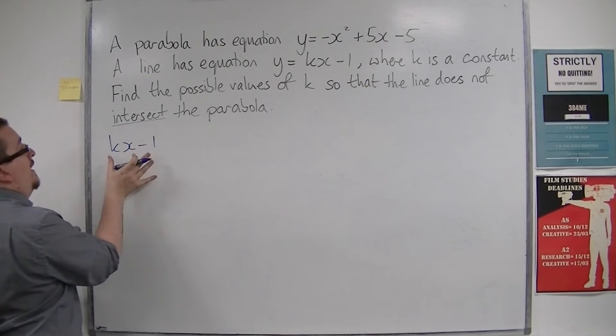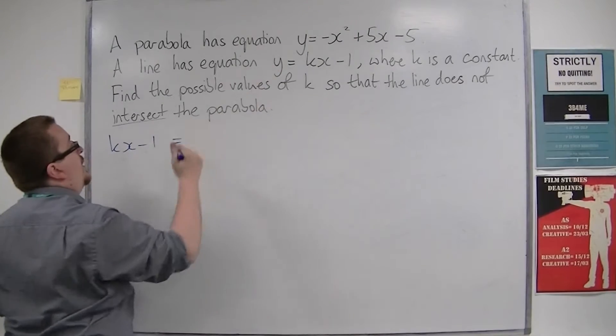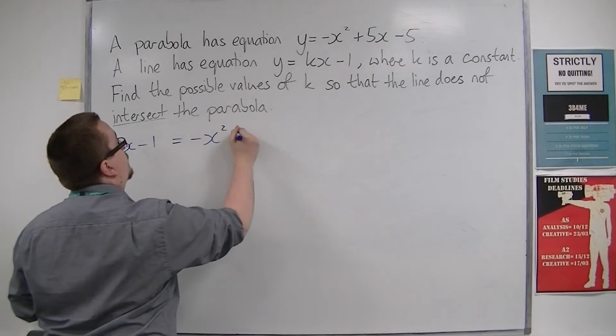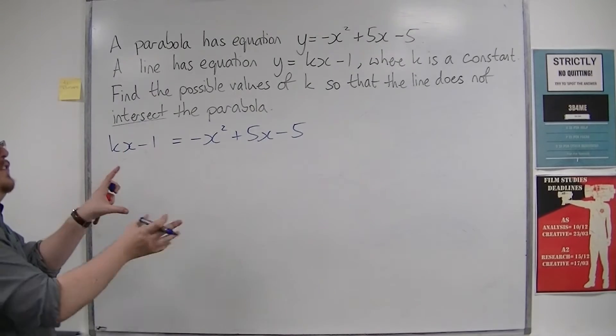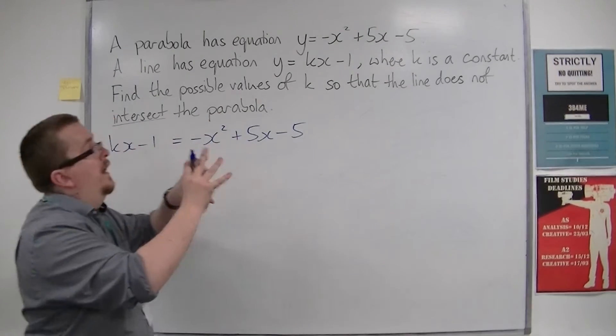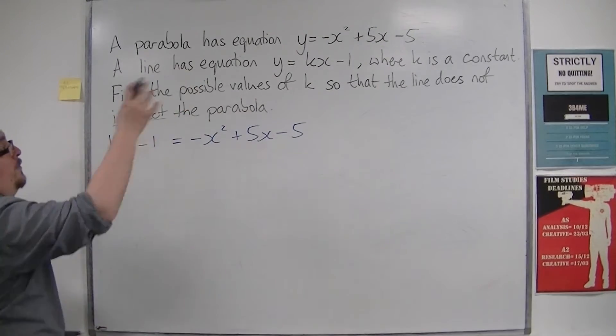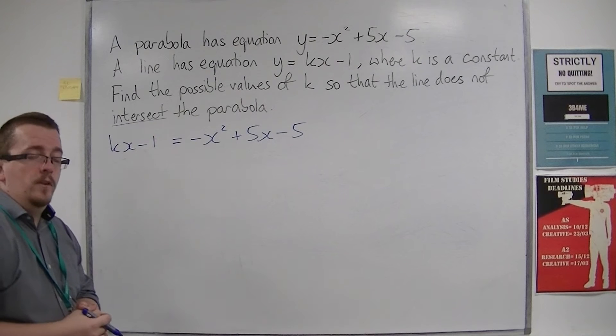So I'm going to put kx minus 1, the equation of the line, equal to the equation of the parabola. So effectively substituting y equals kx minus 1 into the first equation of the parabola.